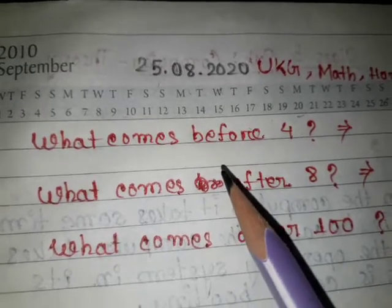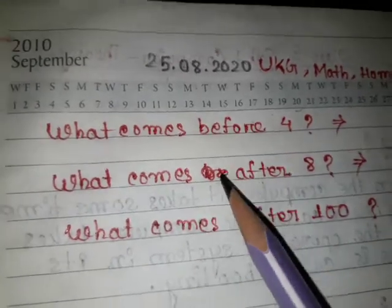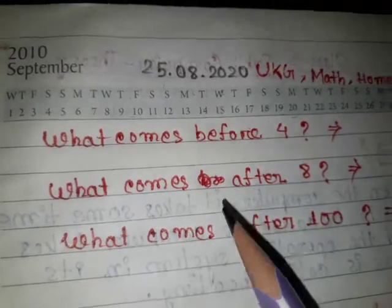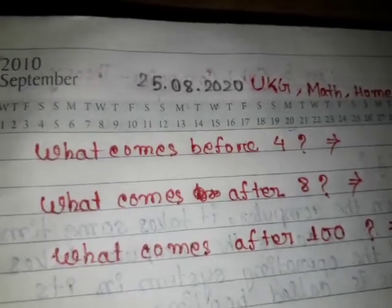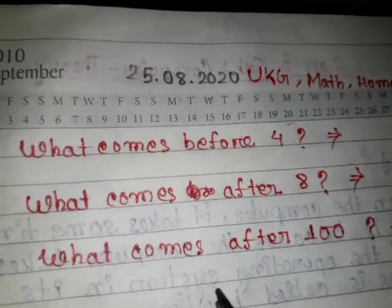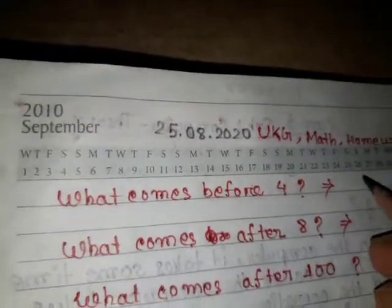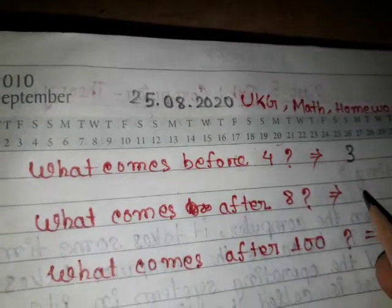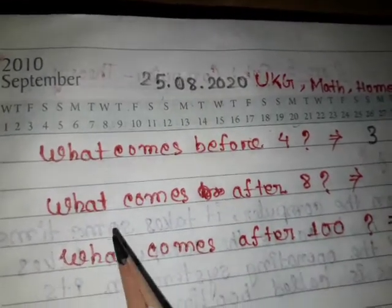What is the meaning of before? Before means what comes just before a number. So what comes before four? We know the answer is three, because three comes before four. So the answer is three.